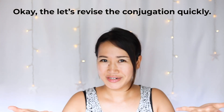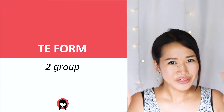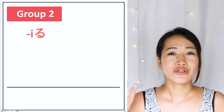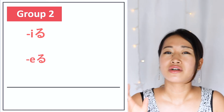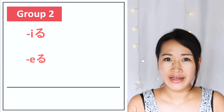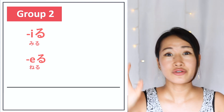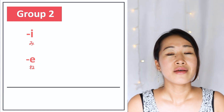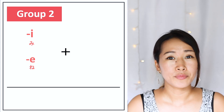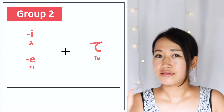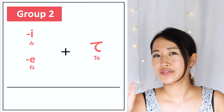Let's review the conjugation. Group 2 verbs always end with る with an AI or IE ending before it. Whenever you conjugate a group 2 verb, this る disappears, and where te-form uses て, here you change it into た. So for example, to watch or to look — 見る — the ta-form would be 見た.